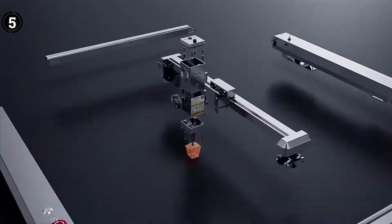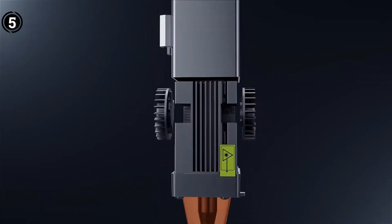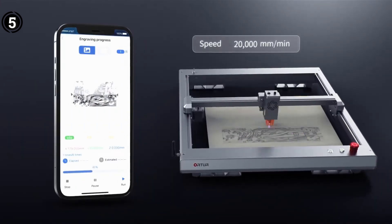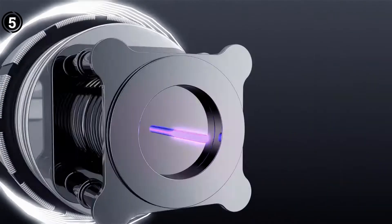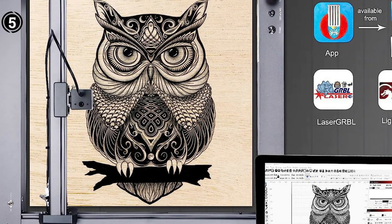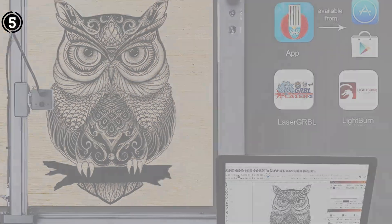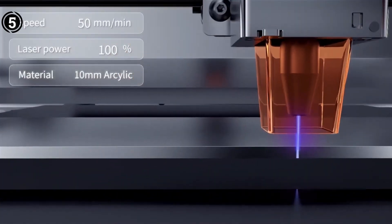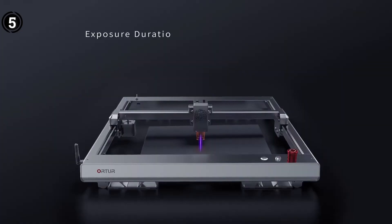The user-friendliness of the Order Laser Master 3 is exceptional. It supports various control methods including TF card, USB, Wi-Fi, and a dedicated app called Laser Explorer, compatible with both iOS and Android devices. The app provides automatic operation guidance and is novice-friendly, making it easy for beginners to create intricate designs and projects.